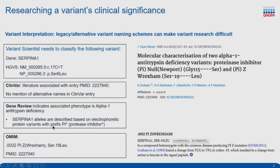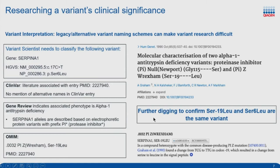You see that variants were initially described based on electrophoretic protein variants with the prefix PI denoting protease inhibitor — the PI name combined with the location where the variant was identified, all before they knew SERPINA1 was the associated gene. So not only do you have what appears to be a legacy name where the codon is different, but also an alternative naming scheme based on location. Even looking at the OMIM entry gives similar information and the same literature, but still no confirmation that Serine 6 Leucine is the same variant as Serine minus 19 Leucine. You can see how time-consuming this workflow can be.